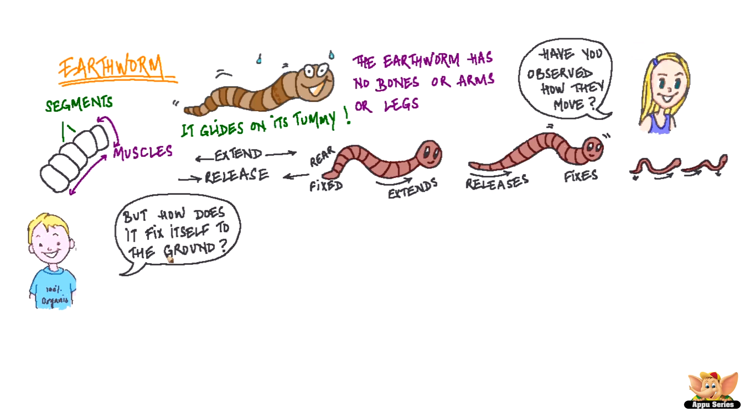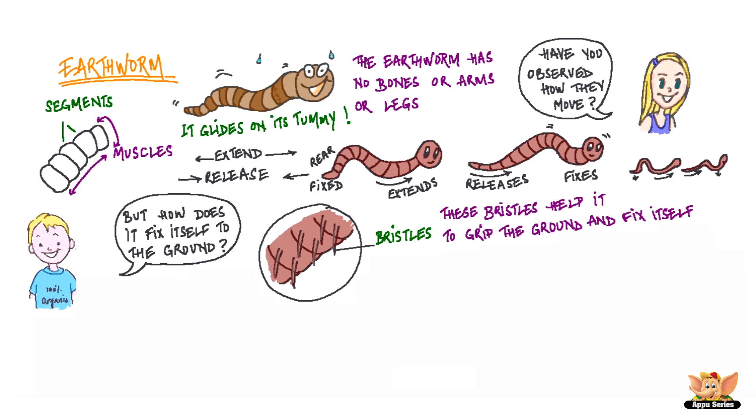But how does it fix itself to the ground? The earthworm has a large number of tiny hair-like structures called bristles connected to the muscles. These bristles help it to grip the ground and fix itself. As the earthworm moves, its body secretes a slimy liquid that makes its movement easier.